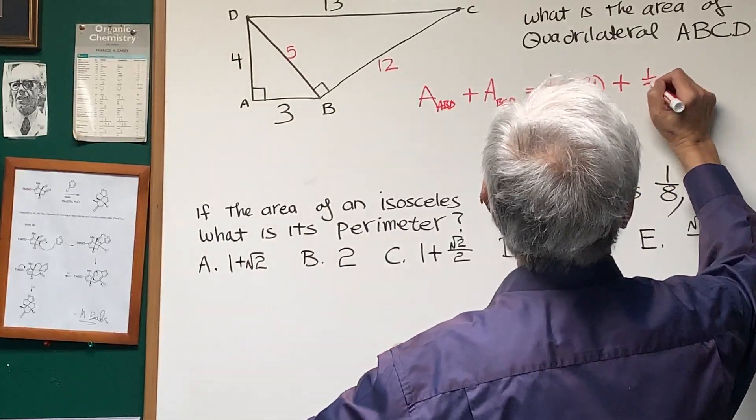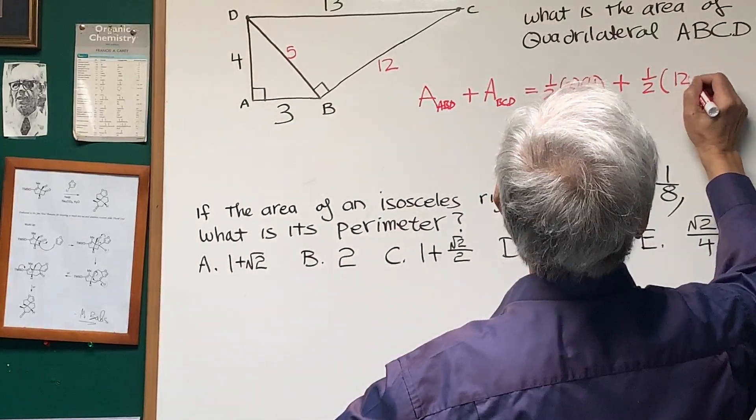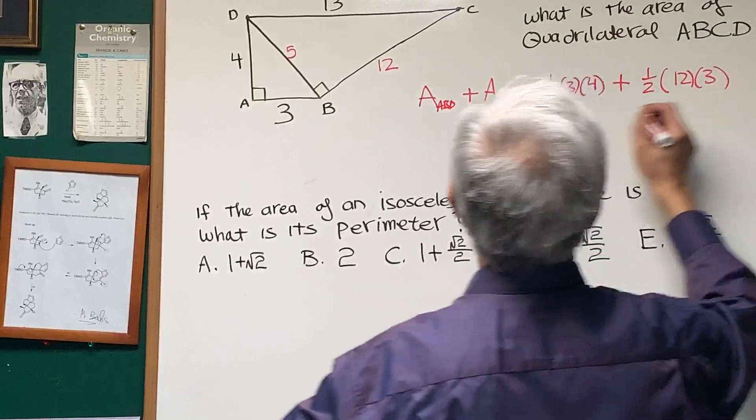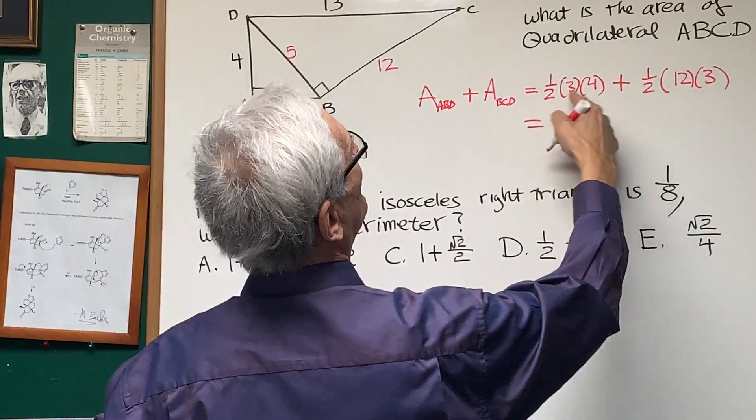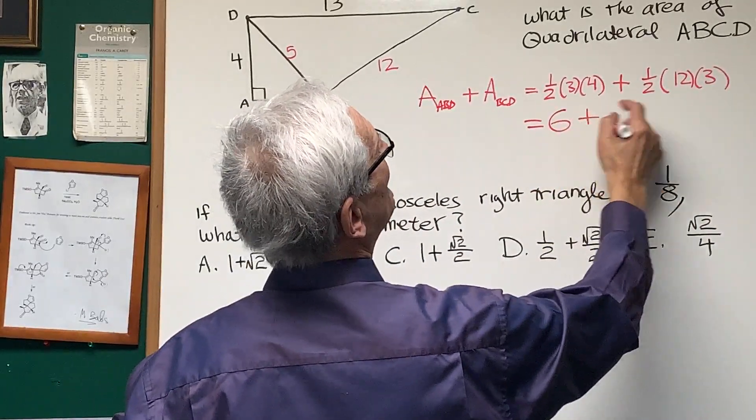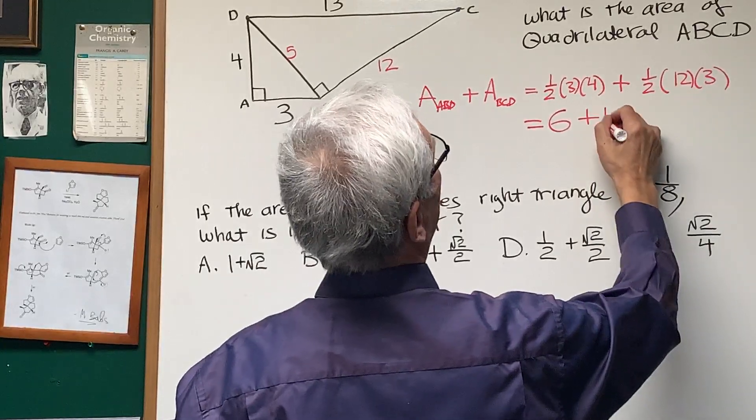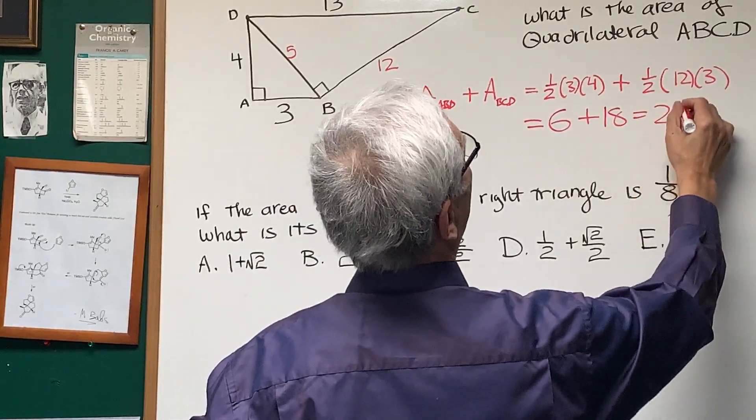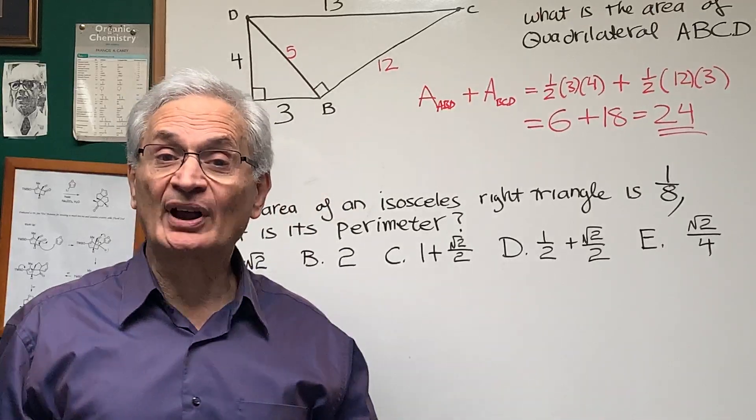three times four. And over here, for the larger triangle, one half the base times the height. So, let's see. Half of four is two times three is six, plus half of twelve is six times three is eighteen. So, the area is twenty-four.